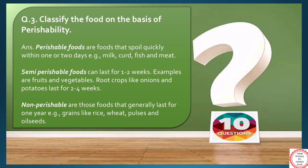Root crops can be included in semi-perishable foods, like onion and potato, which can last for around two to four weeks. And the last one, non-perishable foods — these are the ones that generally last for one year. Examples are grains like rice, wheat, pulses and oil seeds.